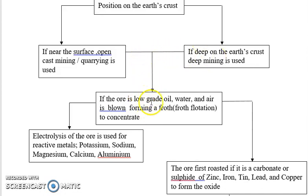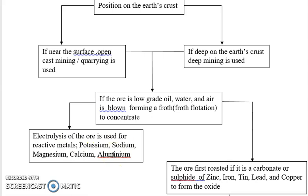If the ore is low grade, oil, water, and air are blown in, forming a froth flotation process to concentrate the amount of ore. If the ore is of a very reactive metal — such as potassium, sodium, magnesium, calcium, or aluminium — electrolysis is used. In this chapter we focus on sodium and aluminium, which are extracted by electrolysis because they are very reactive metals.